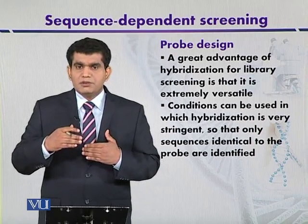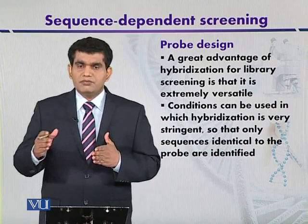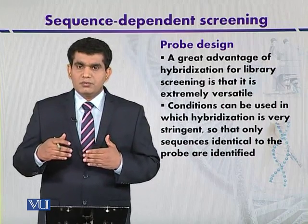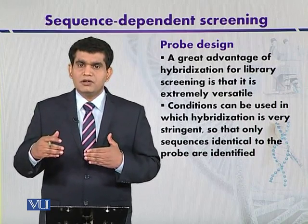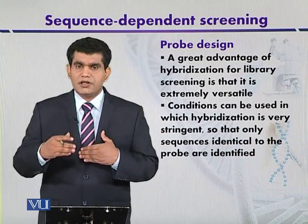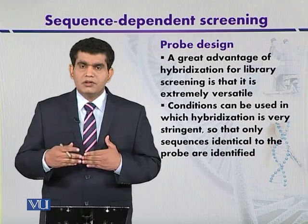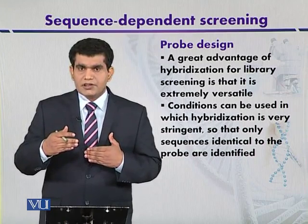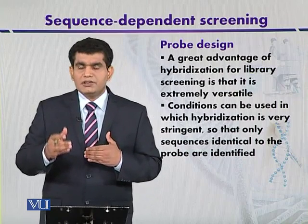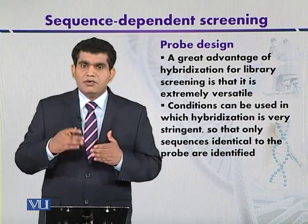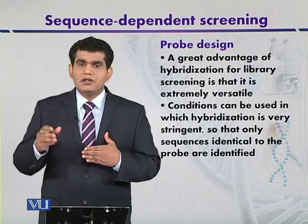At low stringency, highly related sequences and some partially related sequences can hybridize, allowing us to detect homologous genes in a particular species. If a probe is constructed from a highly conserved gene, low stringency conditions allow other homologous gene families to also be detected. This strategy has been used to detect Hox genes across different organisms via cross-hybridization, giving information about closely related gene families.